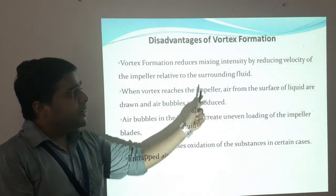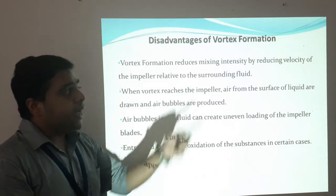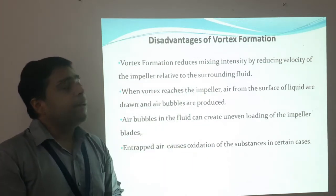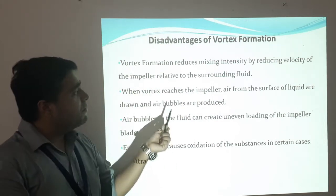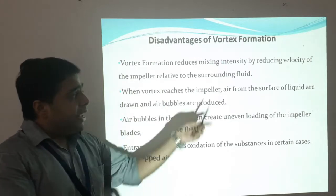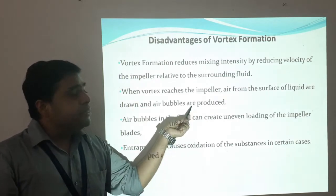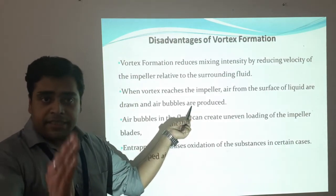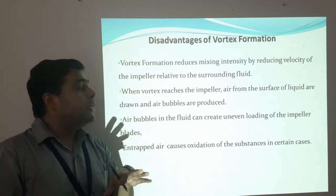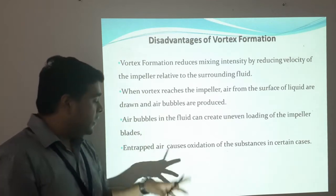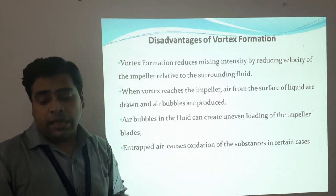What are the disadvantages? Why don't we want vortex to form? Vortex formation reduces mixing intensity by reducing the velocity of the impeller relative to the surrounding fluid. When the vortex reaches the impeller, air from the surface of the liquid is drawn in and air bubbles are produced. Air bubbles in the fluid can create uneven loading of the impeller. The entrapped air also causes oxidation of substances in most cases.